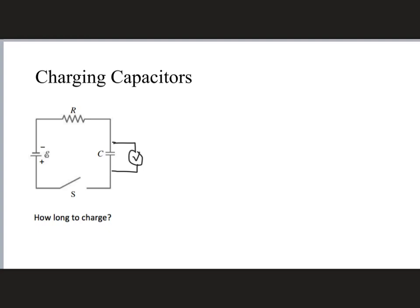Considering voltage: when the switch is first opened, the voltage is zero and the charge is zero. As charge flows onto the plates, the charge builds up and the voltage increases until it equals the voltage of the battery. When fully charged, the charge is Q = CE, where E is the battery voltage, and the voltage across the capacitor equals E.